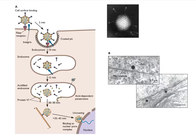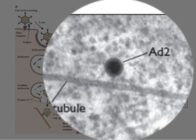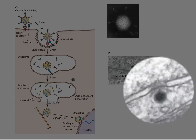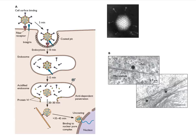Here's a very nice EM of an adenovirion moving down a microtubule in a cell — you can see the particle and the microtubule. And here is an EM of two adenoviruses, one sitting on a nuclear pore complex, docked and about to put its DNA into the nucleus. This makes sense because a virus with double-stranded DNA has to get its DNA into the nucleus, where it must be transcribed and replicated.